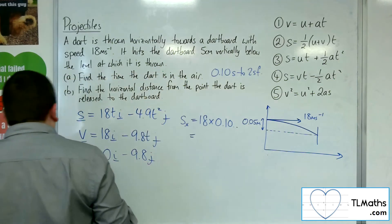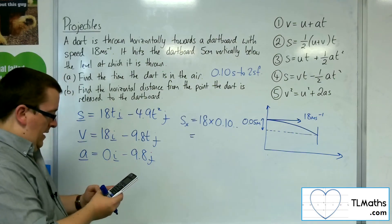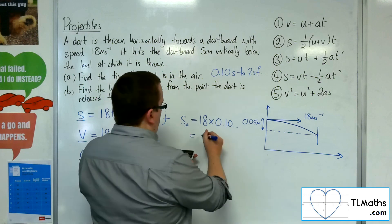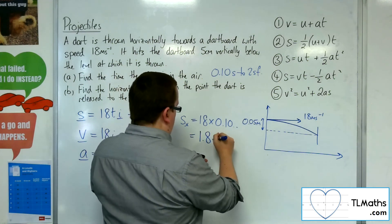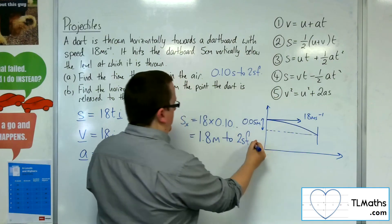So I can multiply what I've still got in my calculator by 18. We get 9 root 2 over 7, which is 1.8 metres to two significant figures.